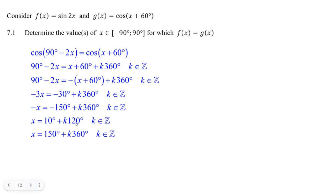360 divided by 3 is 120. And this k, you can just leave as plus because you're putting in negative and positive integers.